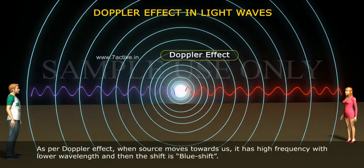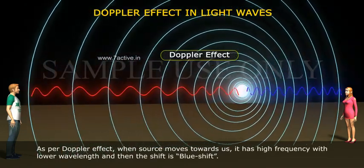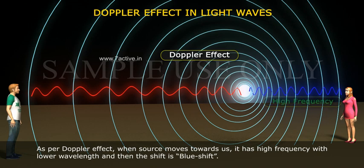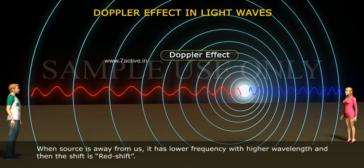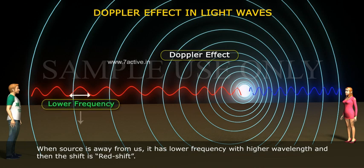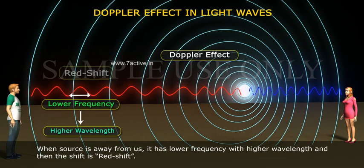As per Doppler effect, when the source moves towards us, it has high frequency with lower wavelength, and then the shift is blue shift. When the source is away from us, it has lower frequency with higher wavelength, and then the shift is red shift.